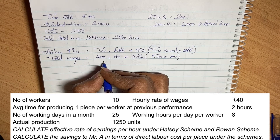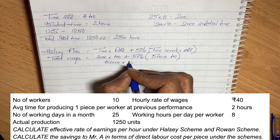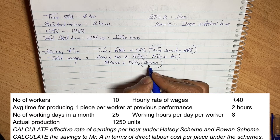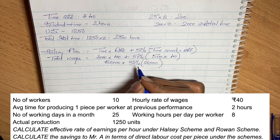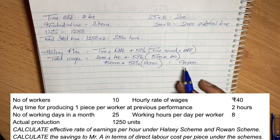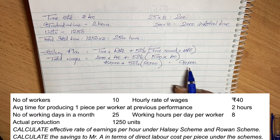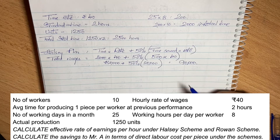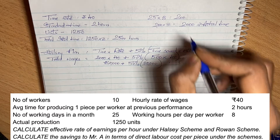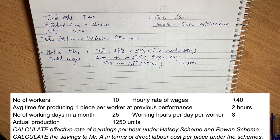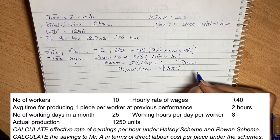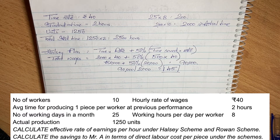Total wages under Halsey plan = 80,000 plus 50% of 500 into 40 = 80,000 plus 10,000 = 90,000 rupees. The labor rate per hour under Halsey plan = total wages divided by actual hours = 90,000 divided by 2,000 = 45 rupees per hour.